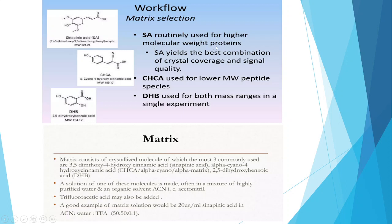For matrix selection: sinapic acid (SA) is routinely used for higher molecular weight proteins and provides the best combination of crystal coverage and signal quality. CHCA is used for lower molecular weight peptide species. DHB is used for both mass ranges in a single experiment. In detail, the matrix consists of crystallized molecules, the most three commonly used being 3,5-dimethoxy-4-hydroxycinnamic acid (sinapic acid), alpha-cyano-4-hydroxycinnamic acid (CHCA), and 2,5-dihydroxybenzoic acid (DHB).